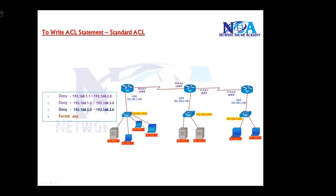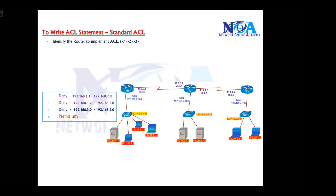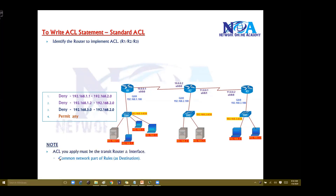The first thing we need to decide is: now that we've decided to write an ACL statement, which router are we going to configure it on? We need to configure the ACL either on Router 1, Router 2, or Router 3 — that has to be decided. On whichever router you decide, we need to make sure that router is a transit router and that the interface where you apply it will be a transit interface as well.